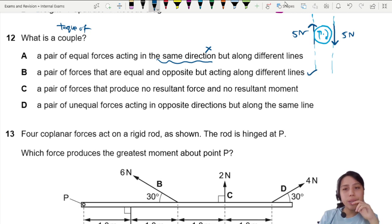Let's look at C: pair of forces that produce no resultant force and no resultant moment. Okay, no resultant force is correct because we look at the diagram five newton up five newton down.